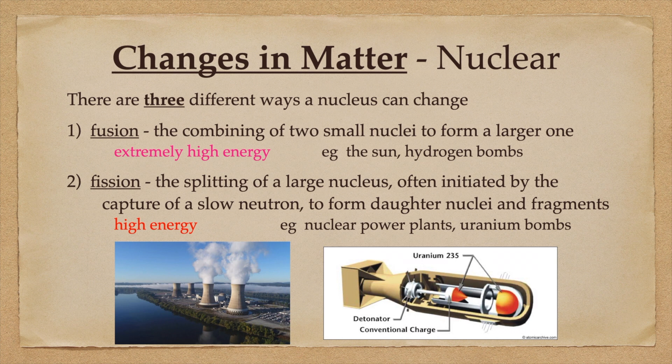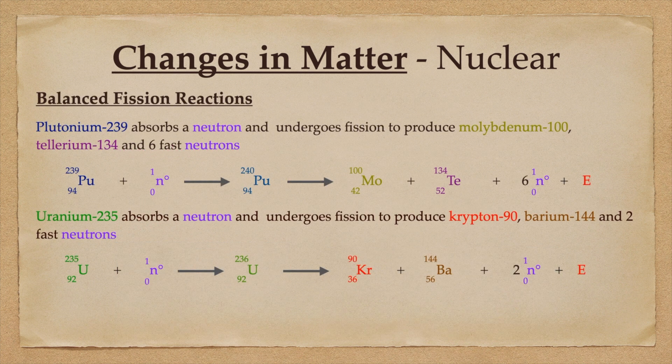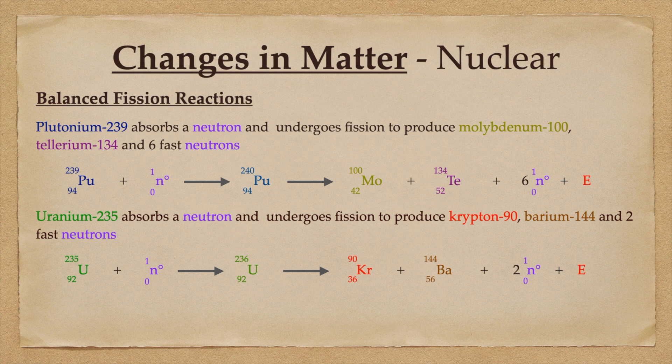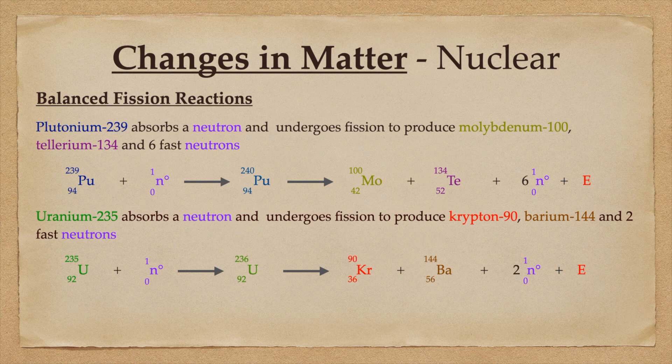An example of a balanced fission reaction would be plutonium-239 absorbing one neutron to temporarily become plutonium-240, that then splits into molybdenum-100 and tellurium-134 and kicks out six fast neutrons and a whole lot of energy.